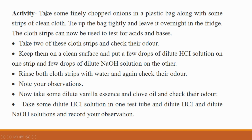Now let's talk about the second activity. Take some finely chopped onions and place them in a plastic bag along with some strips of clean cloth. Keep the bag in the fridge. So the whole activity means you take some onions, cut them, put them in a plastic bag with some cloth strips, and keep it in the fridge. You will be able to use it to test acids and bases.